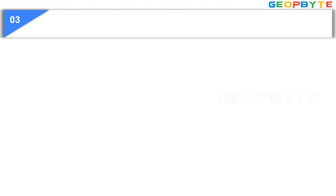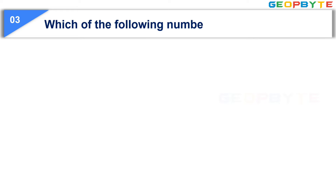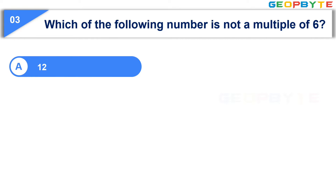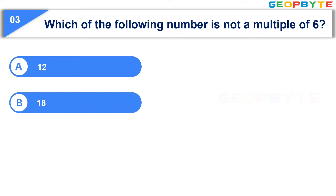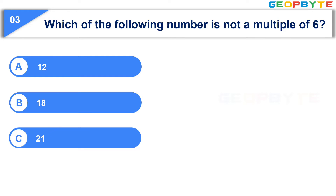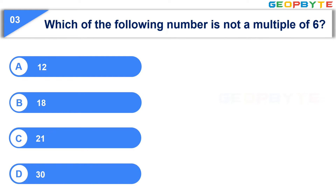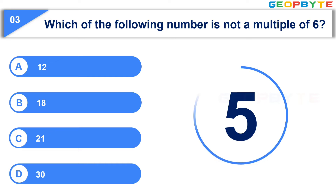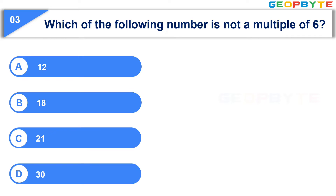The next question is: Which of the following numbers is not a multiple of 6? Option A: 12, Option B: 8, Option C: 21, Option D: 10. Your time starts now. Your time is up and the correct answer is Option C, 21.